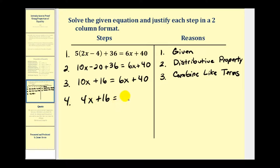And then plus 16 equals 40. So what we did here is we subtracted 6x on both sides of the equation. So our justification is the subtraction property of equality.